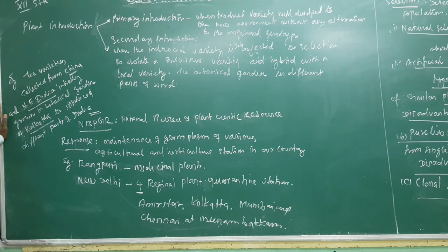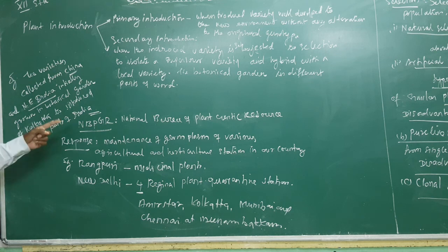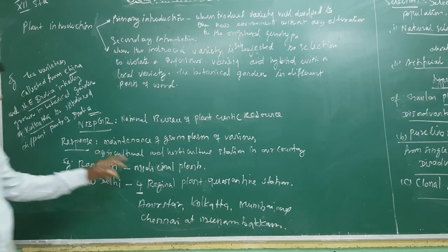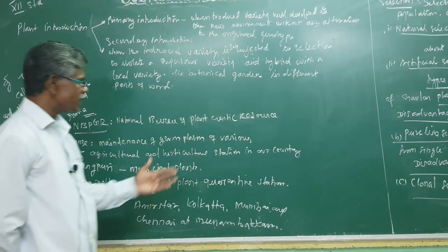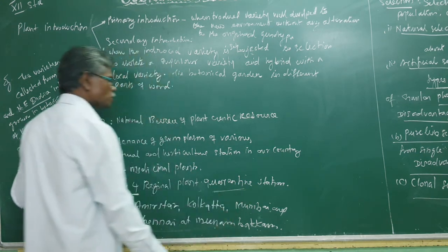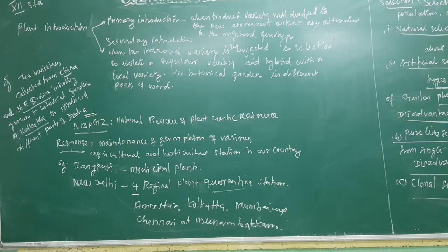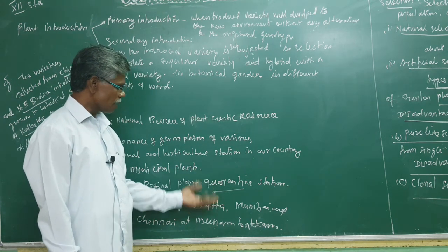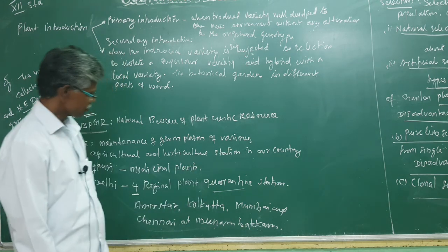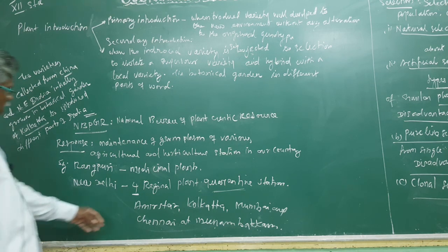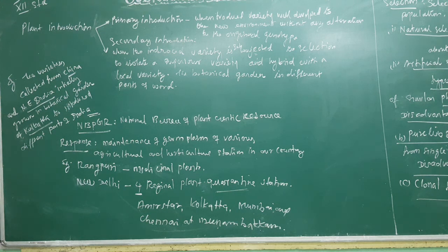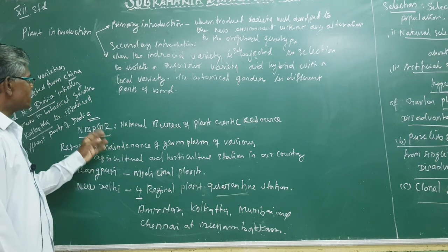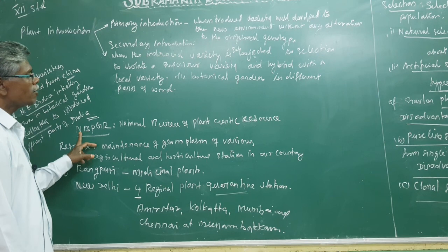For example, medicinal plants like Sarpagandha are maintained by NBPGR. It is located in New Delhi with four regional plant quarantine stations. Quarantine means isolation to prevent the spreading of disease — similar to COVID-19 isolation. The four regional centers are Amritsar, Kolkata, Mumbai, and Chennai (Meenambakkam), all maintained by NBPGR.